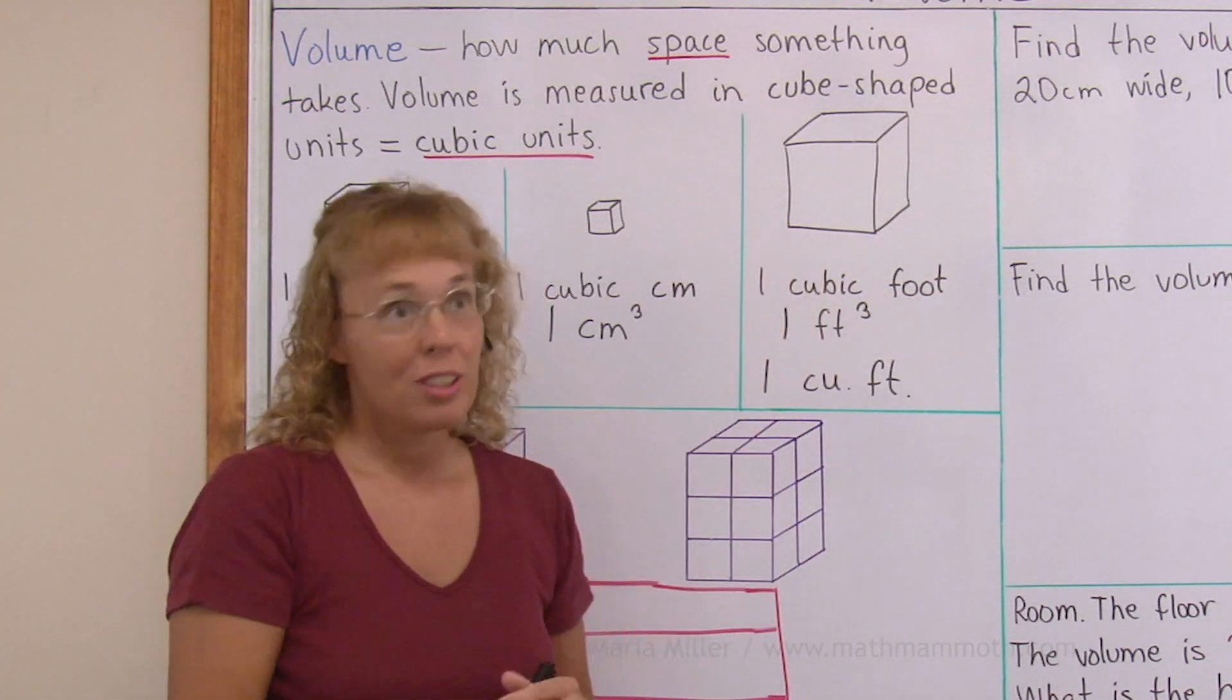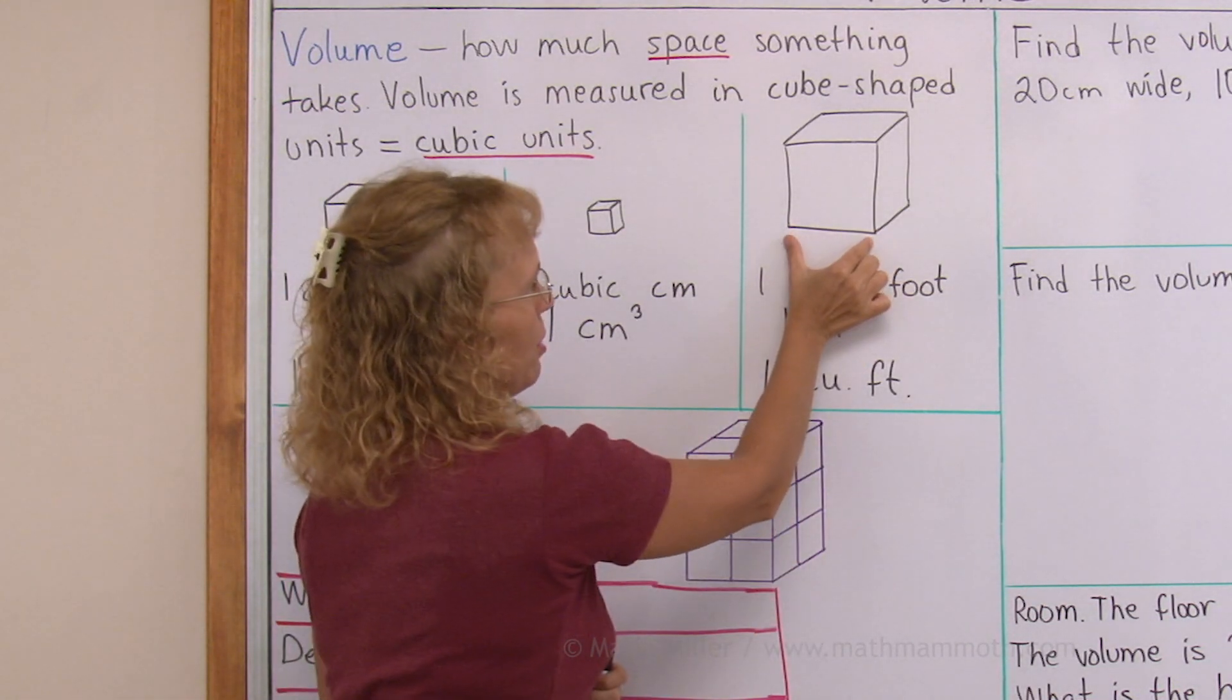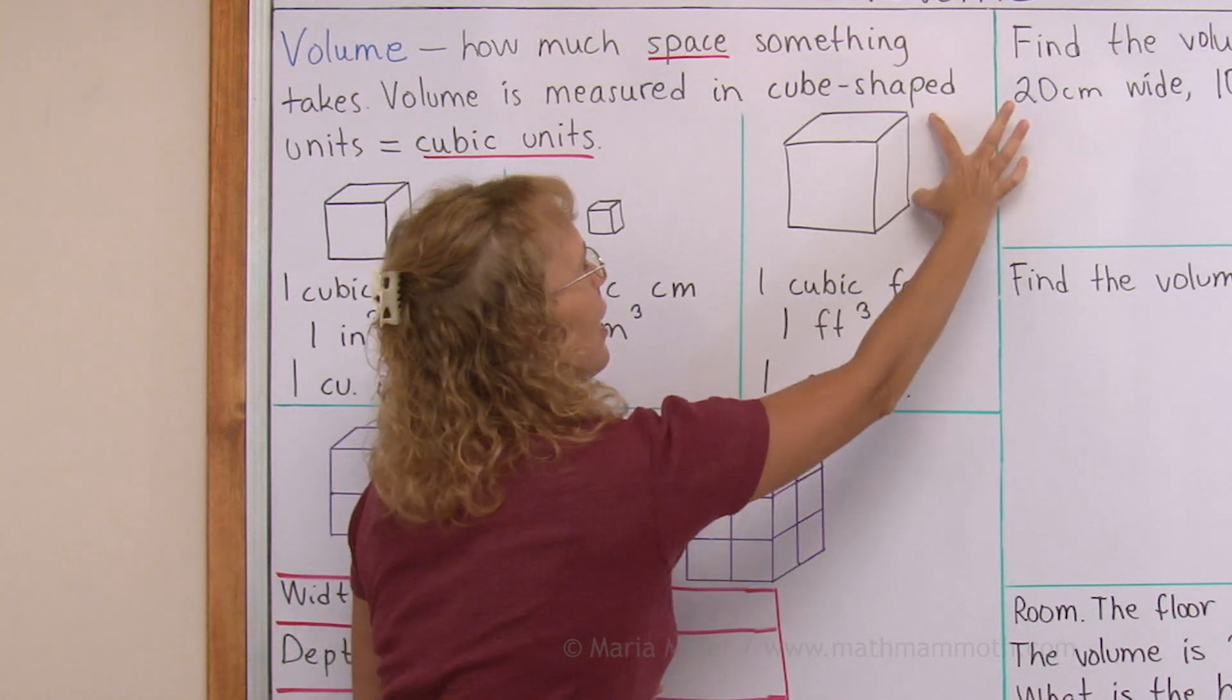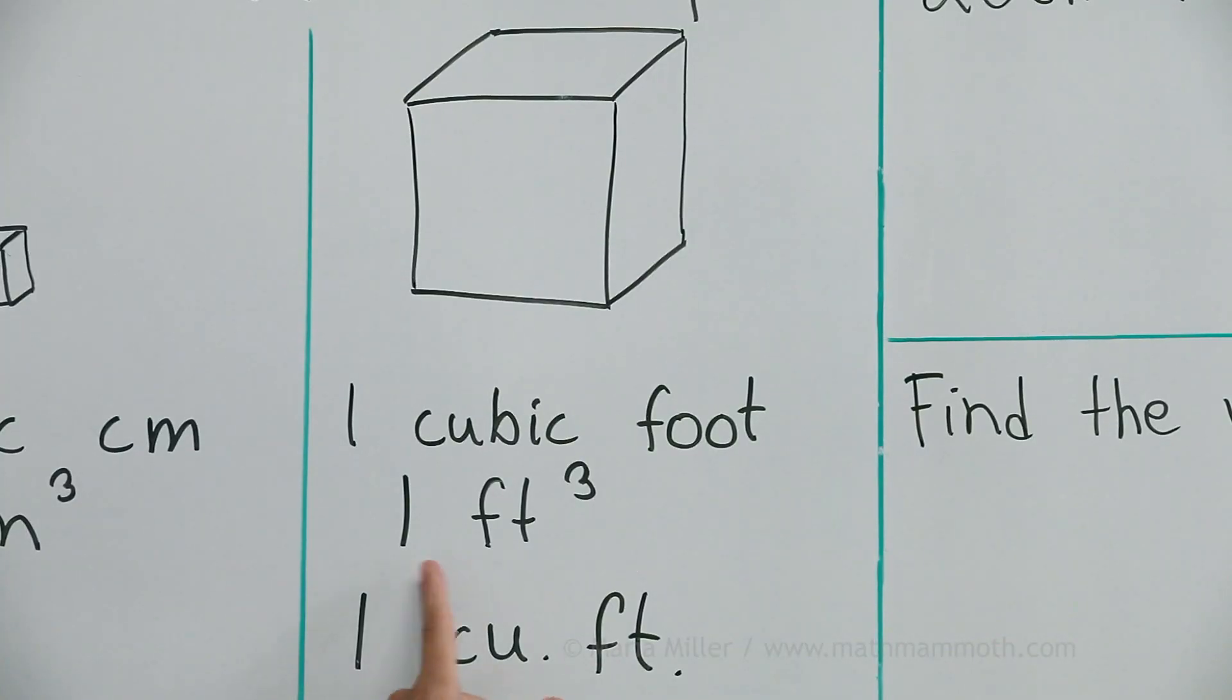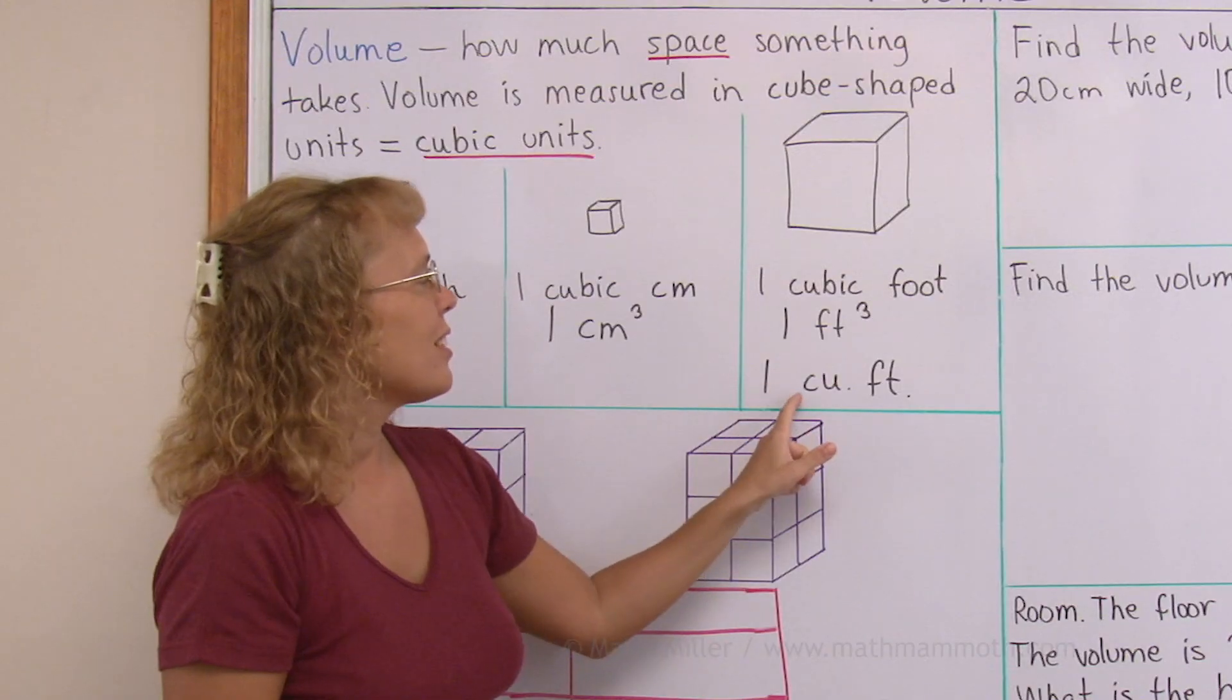And here's one cubic foot, so that means this is one foot, this is one foot. And the height, all three dimensions are one foot. And you can abbreviate it as ft elevated three, but don't read it that way. It is cubic foot. One cu ft.